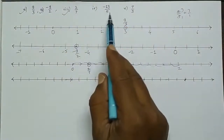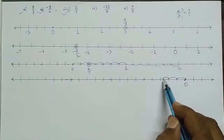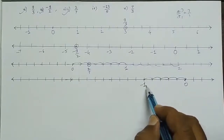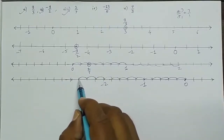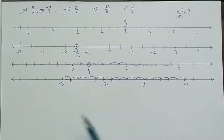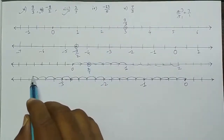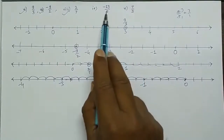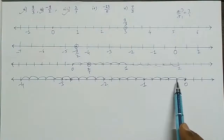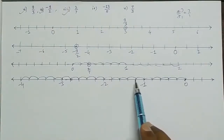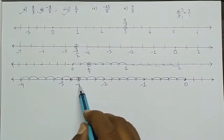Next: minus 13 upon 5. Take 0 and make 5 equal parts per unit. Going negative: minus 1 (at 5 parts), minus 2 (at 10 parts), minus 3 (at 15 parts), minus 4 (at 20 parts). Counting 13 parts from 0 going negative: minus 1 by 5, minus 2 by 5, up to minus 13 by 5. So here it is minus 13 upon 5.